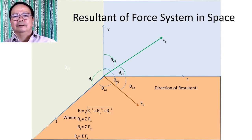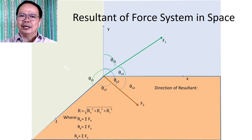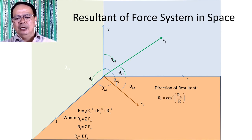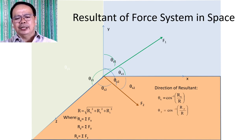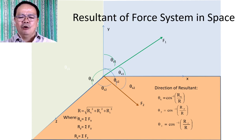The direction of the resultant can be expressed in terms of the angles it makes with respect to the three mutually perpendicular axes — θx, θy, and θz. These are computed using the formulas: θx = arccos(Rx / R), θy = arccos(Ry / R), and θz = arccos(Rz / R).